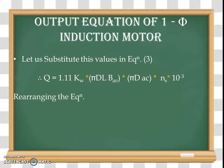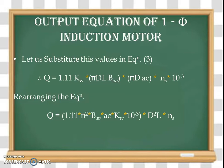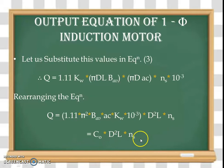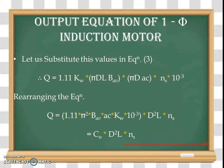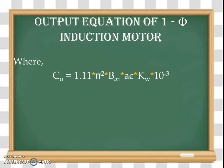After substituting, equation number 3 becomes Q = 1.11 × Kw × πdL × Bav × AC × πd × Ns × 10⁻³. Rearranging with proper grouping, the equation becomes Q = 1.11π² × Bav × AC × Kw × 10⁻³, multiplied by D²L × Ns. This can be written as Q = Co × D²L × Ns, and this is called equation number 4 — our output equation for the single-phase induction motor.